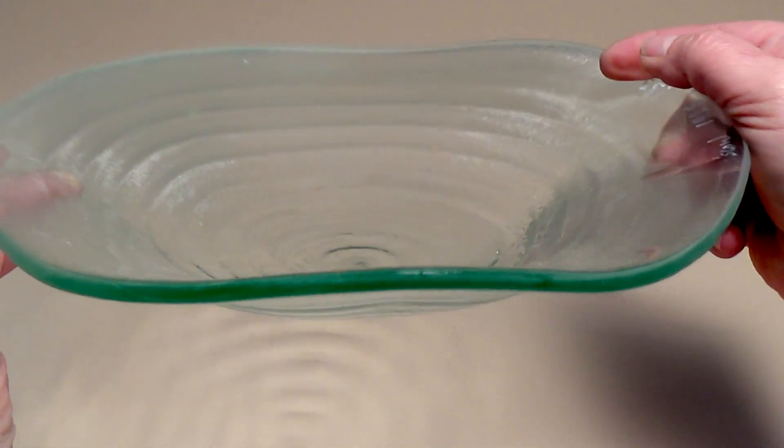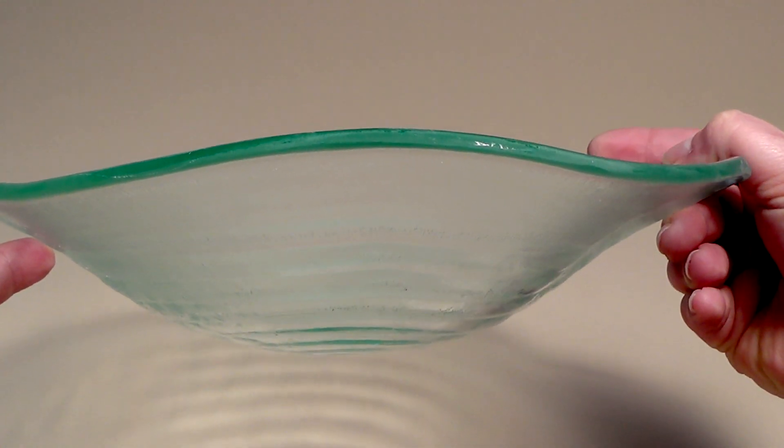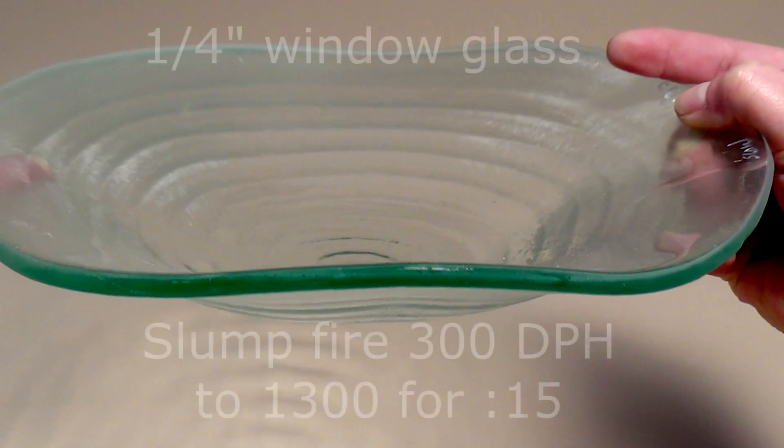Here I'm using quarter-inch window glass or float glass, which is harder than most arc glass, so these temperatures are higher than would be used for Spectrum, Euroboros, Wismac, or Bullseye.